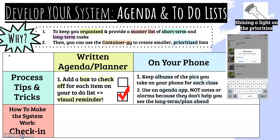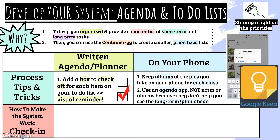Another thing — I really suggest not using the Notes app for an agenda on your phone. I think it's totally okay to use Notes for a prioritized list, but it's not going to allow you to do long-term planning ahead. So I suggest getting an agenda app. There are lots of free ones available. The one I really suggest based off of other people's suggestions is Google Keep, but definitely search around and try until you find one that fits you best.